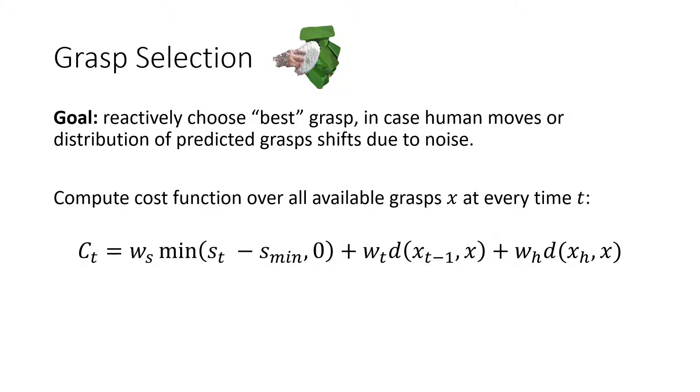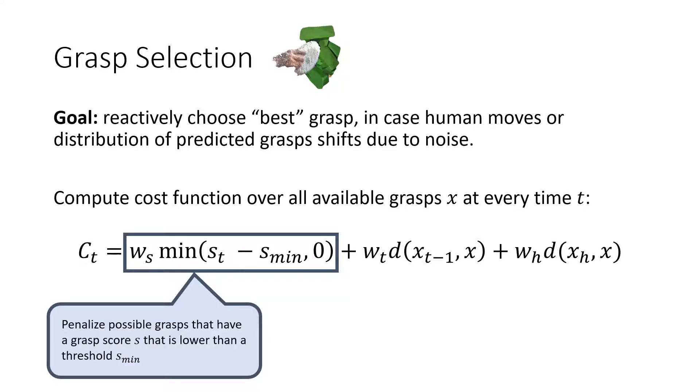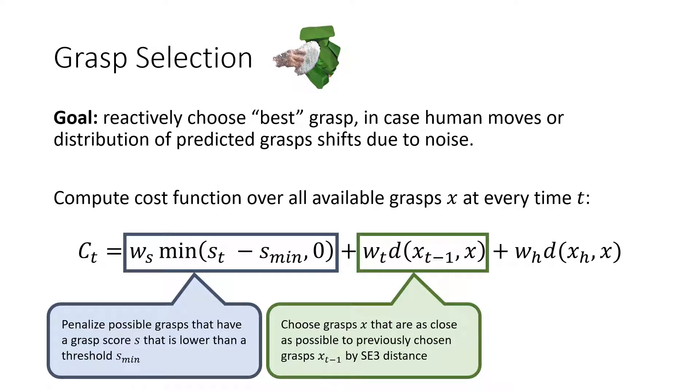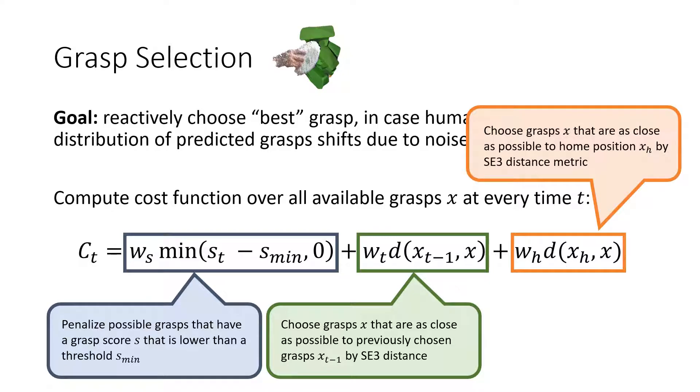We do this via a cost function that is computed at every time step. First, we penalize grasps that have a lower score than a certain threshold. We also penalize grasps that are farther away from previously chosen grasp by a distance metric that balances between both a Cartesian and an orientation-based cost. Finally, we also penalize grasps that are far away from the home position. This prevents the robot's configuration from drifting too far into unreasonable areas.